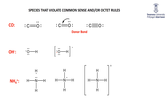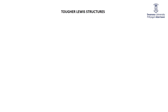We're going to go through the process, and in a later PowerPoint we'll talk about these ambiguities and differences. The method for tougher Lewis structures — this is my method that I particularly like. It's a four-step process. The first step is actually the zero step: before you even start the four steps, try using common sense. Common sense is the way to go. Carbon: four bonds. Oxygen: two bonds. Hydrogen: one bond. Chlorine: one bond. And so on.